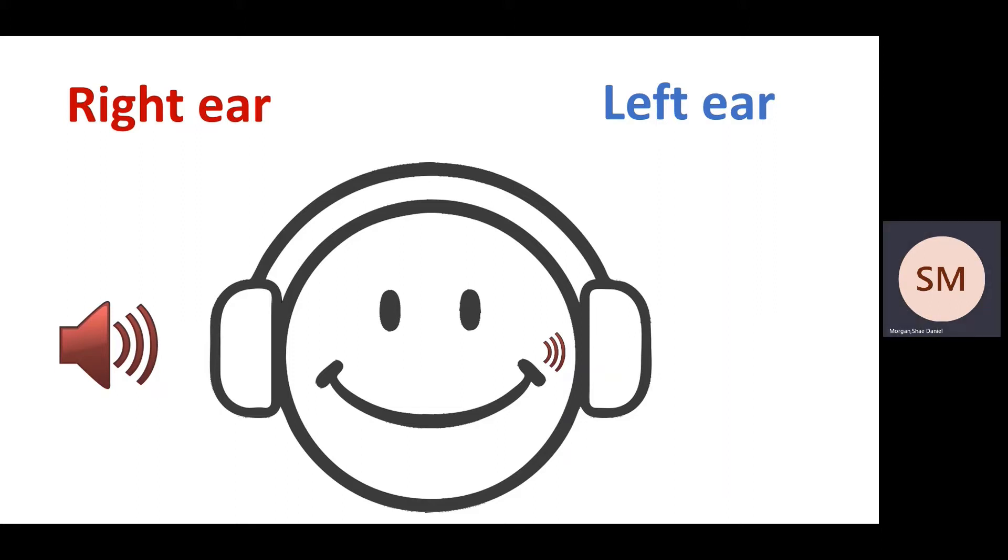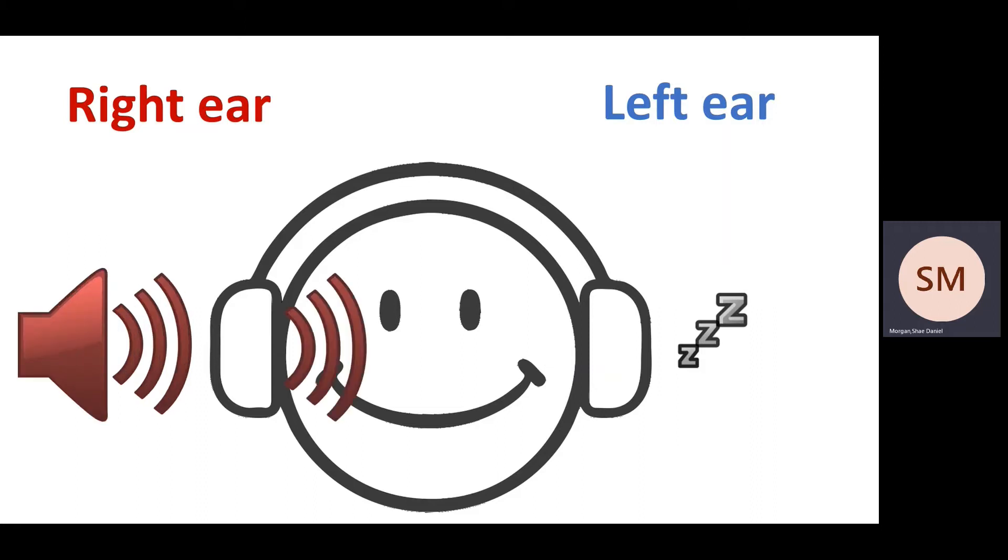If the sound that crosses over gets attenuated enough, or if it's a quiet enough sound, then your left ear or the other ear won't respond and it'll continue sleeping just fine. But if you put a bigger sound into that other ear, then the sound that crosses over to the other side might be loud enough for you to hear it.